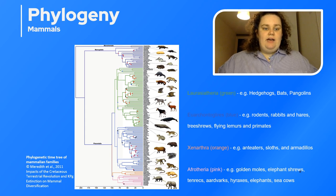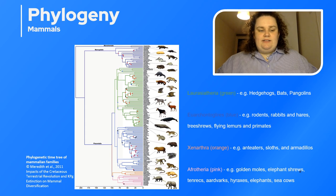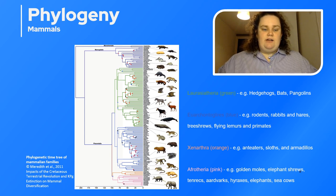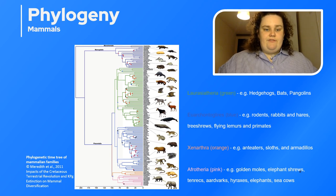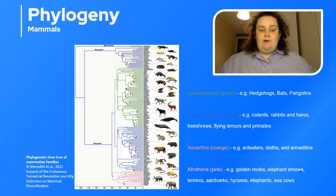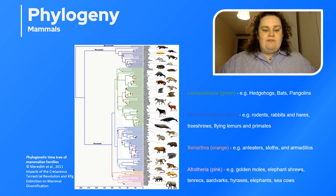Here we have a lovely cladogram of all the different extant mammals. There is a pale grey rectangular box showing the boundary between the Mesozoic — in grey — and the Cenozoic — in white. The colour-coded branches in the placental mammals correspond to different groups: Laurasatheria in green includes hedgehogs, bats and pangolins; Euarchontoglires includes rodents, rabbits, hares, lemurs and primates; Xenarthra in orange includes anteaters, sloths and armadillos; and Afrotheria in pink includes golden moles, elephant shrews, aardvarks, hyraxes, elephants and sea cows.